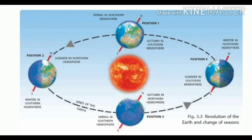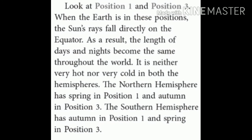Look at figure 3.3, The Revolution of the Earth and Change of Season. Here we can see all the four positions of the seasons. Look at position 1 and position 3. When the Earth is in these positions, the Sun's rays fall directly on the equator. As a result, the length of days and nights become the same throughout the world. It is neither very hot nor very cold in both the hemispheres. The Northern Hemisphere has spring in position 1 and autumn in position 3. The Southern Hemisphere has autumn in position 1 and spring in position 3.